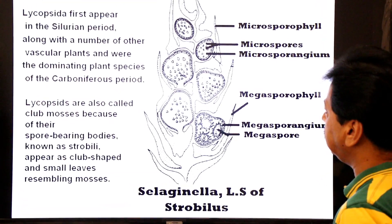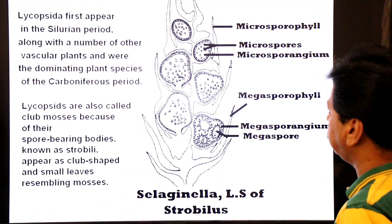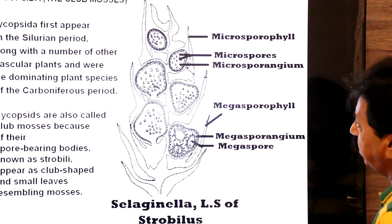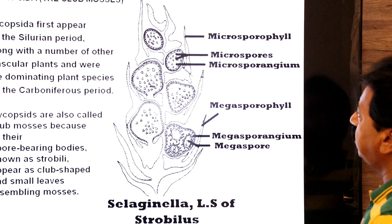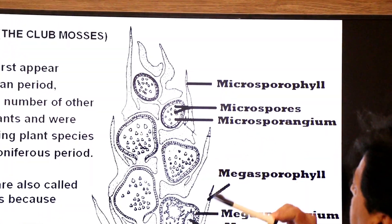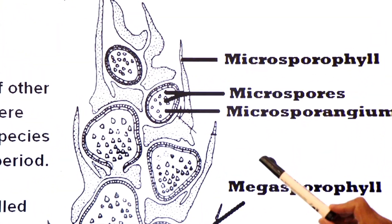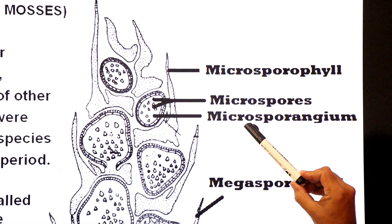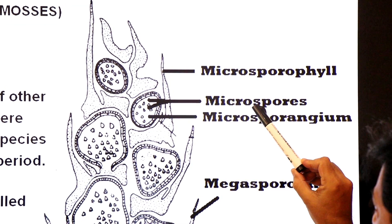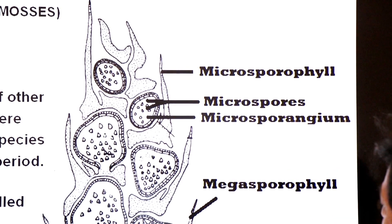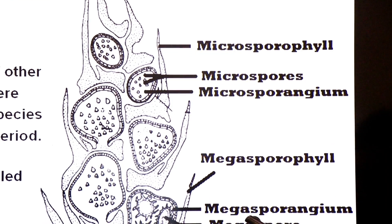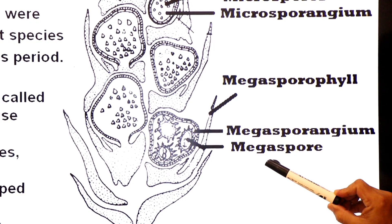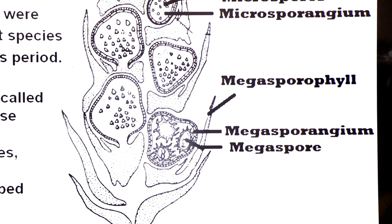In Selaginella, which is a heterosporous plant, it bears sporophylls — micro sporophylls and mega sporophylls. In the axil of micro sporophylls, microsporangia are found, which produce microspores. In the axil of mega sporophylls, megasporangia are found, which produce megaspores.